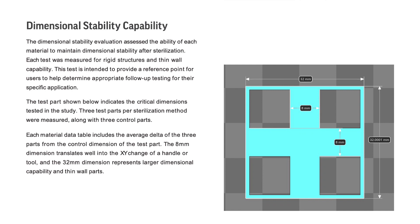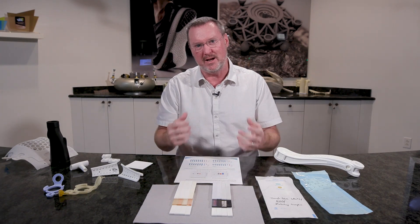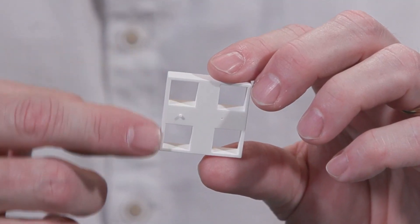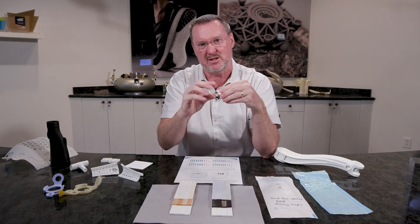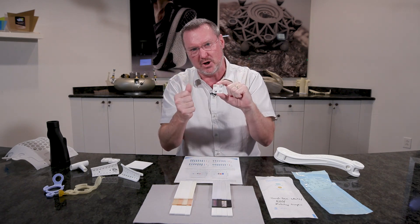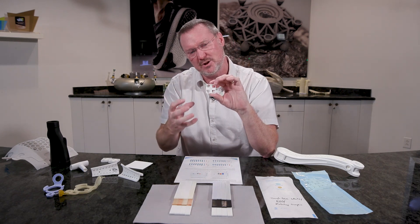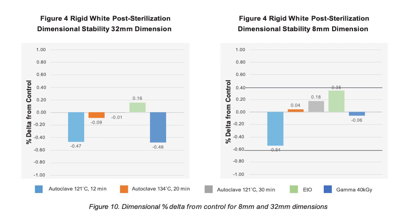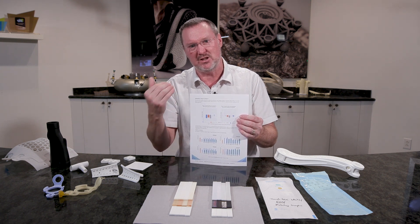Dimensional stability is very important, especially when putting parts through high temperatures, steam, chemical exposure, and radiation. We took a part that allowed us to look at thin wall features as well as more rigid, solid features — with cutouts to simulate ribbing you'd normally see in an injection molded part with good structural design. Do we get distortion in thin wall parts or thicker parts? You'll see that data in the paper, looking at how autoclave affected the parts, and you'll see the percent change before and after autoclave, before and after gamma — to determine if that percent change is acceptable for your application.